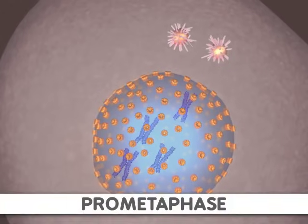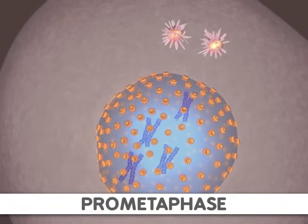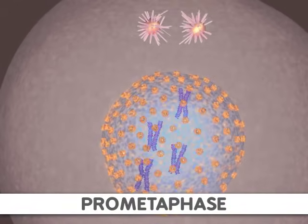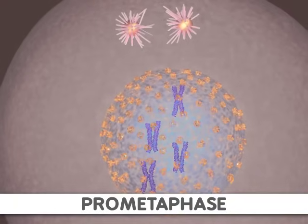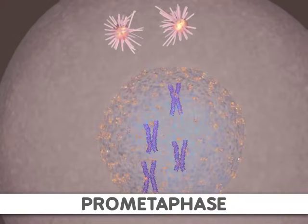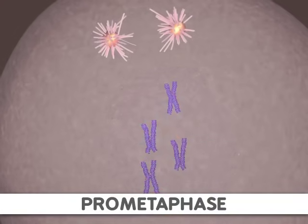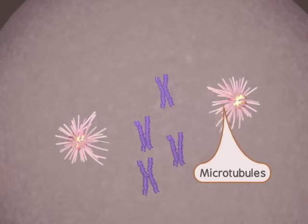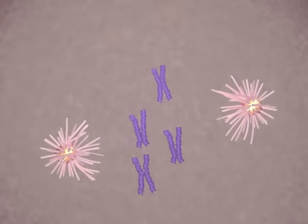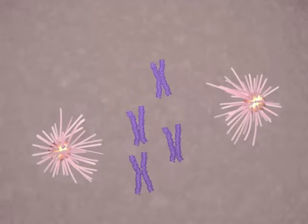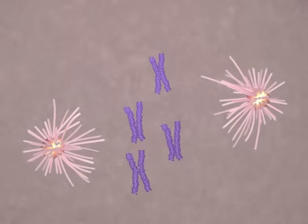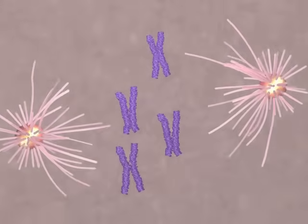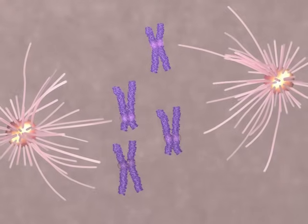Next, prometaphase begins when the nuclear membrane is broken down. At the same time, microtubule strands, or spindle fibers, are growing from the centrosomes. These strands attach to a protein structure called the kinetochore. One kinetochore is attached to the centromere of each sister chromatid.